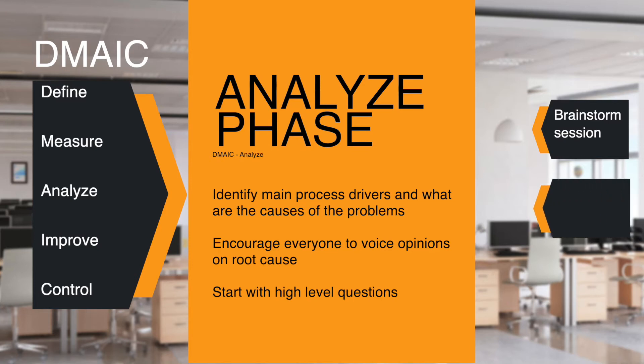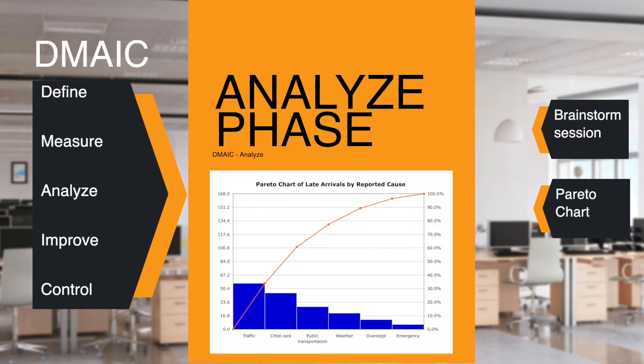The second tool is the Pareto chart. The idea behind this is an observation made by Italian economist Pareto, who noticed that 80% of the land in Italy was held by 20% of the people. Further studies show that the 80-20 rule is true for many things, and states that 80% of problems are caused by 20% of causes. It is a bar chart in which independent variables or events are on the horizontal axis and occurrences on the vertical, all in decreasing order of frequency.